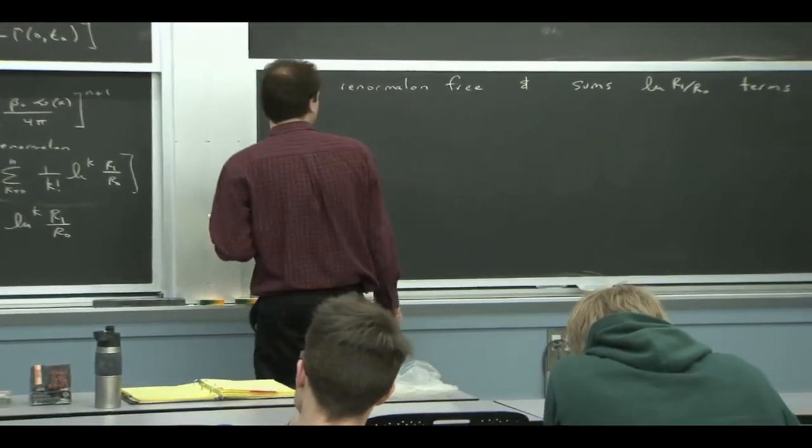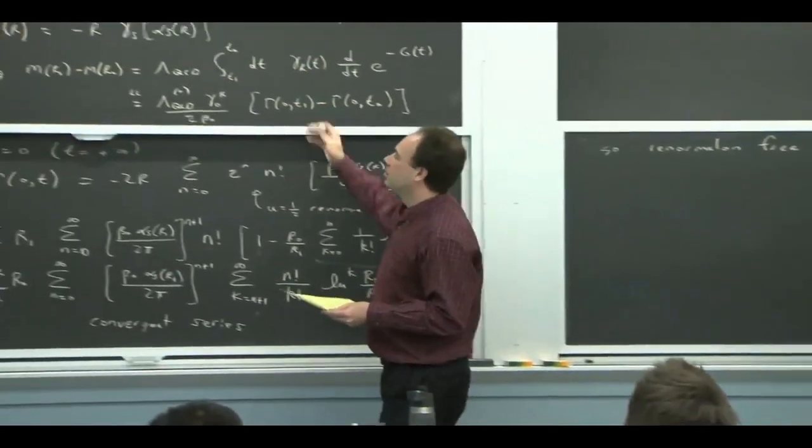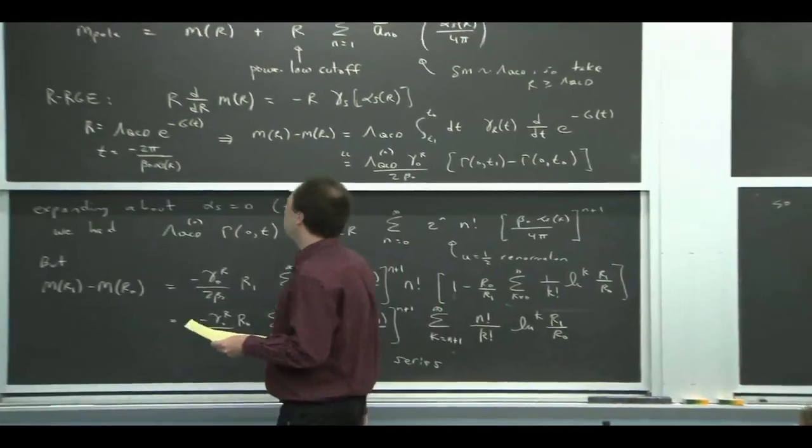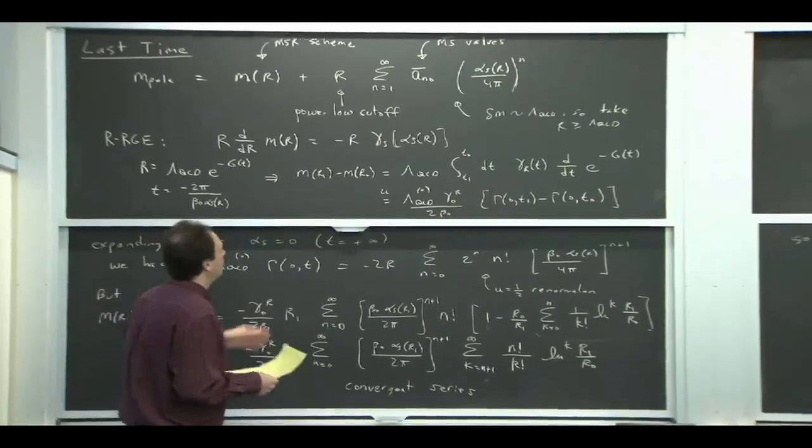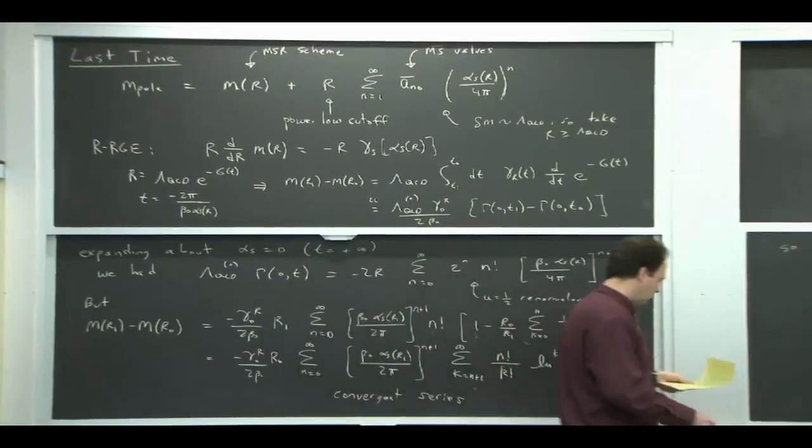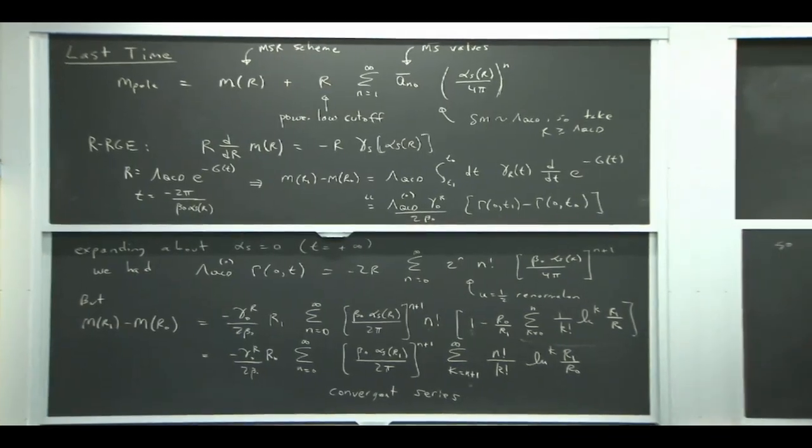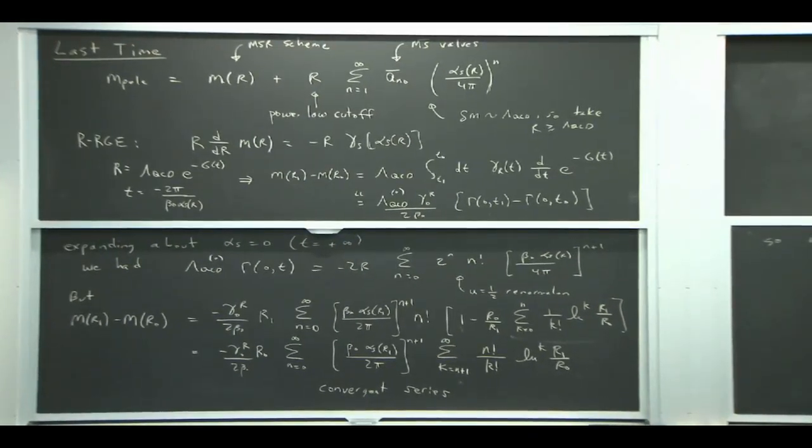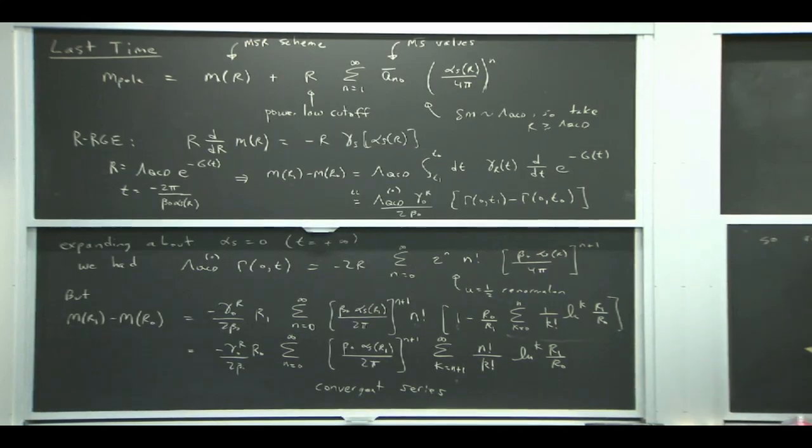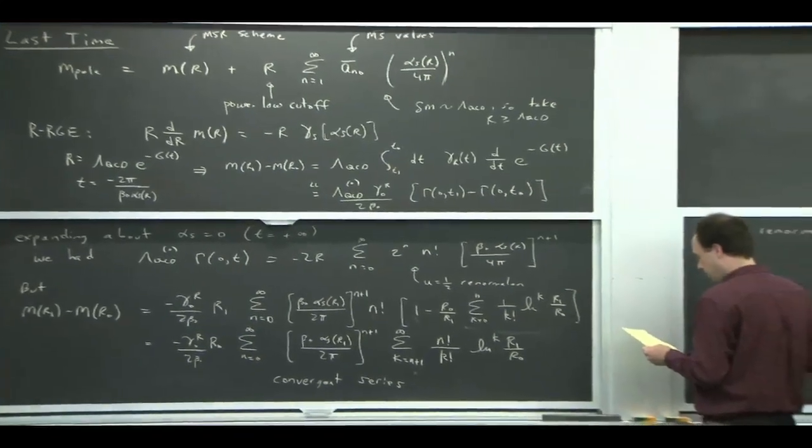You'd get a correspondingly precise value of MS-bar because the series between this mass and the MS-bar mass is, again, a renormalon free series. Then you could take that mass at the MB scale, run it up to, say, the Higgs scale, and use it for phenomenology. So you always want to be able to go back and forth between schemes. If different schemes have different scales associated to them, then you need the renormalization group in order to put them at the same scale where you want to do the conversion. So that's why being able to sum up these logarithms without reintroducing any renormalon problems is important.